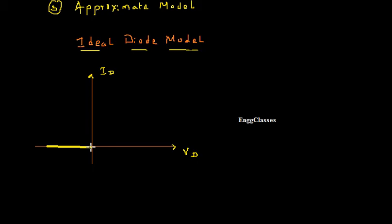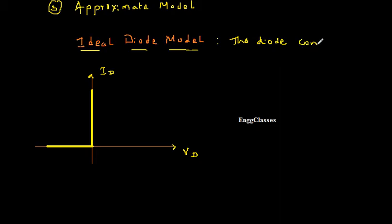In reverse bias the diode does not conduct and the current will be zero. When Vd is made greater than zero, the diode starts conducting and I start getting the current ID. This is the ideal diode model. The diode conducts when Vd is greater than zero. If the diode is made of silicon or germanium there is a knee voltage, but in the ideal model we ignore that.